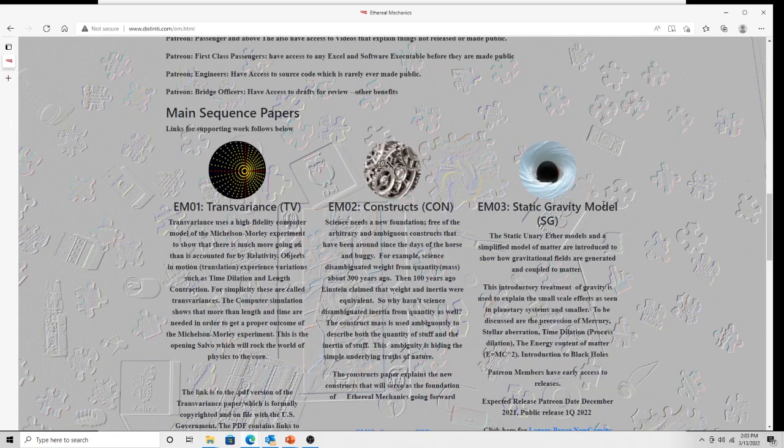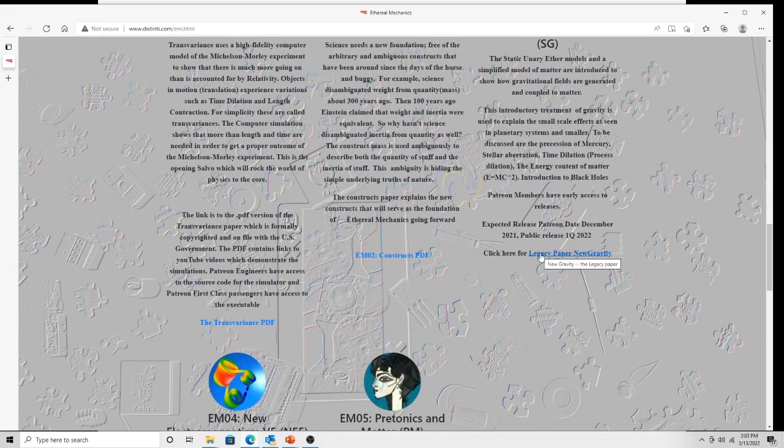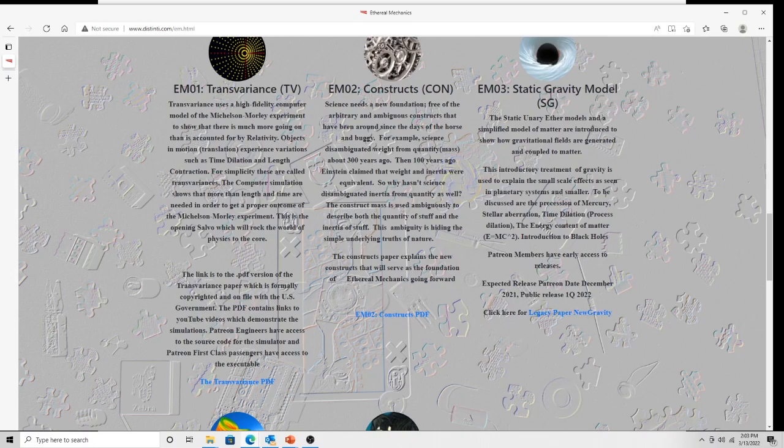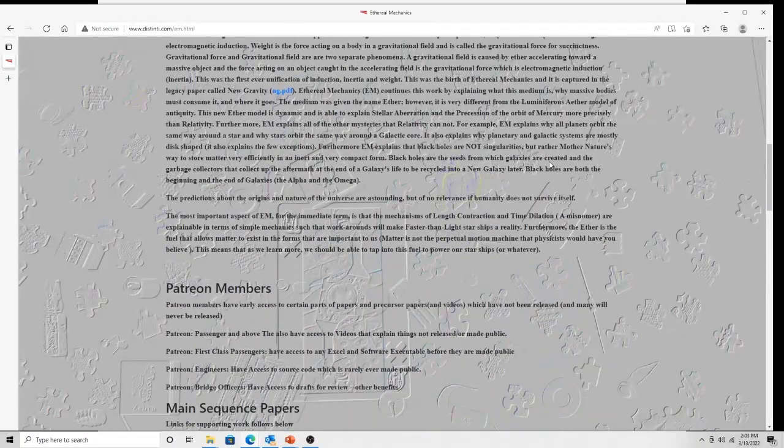Ethereal Mechanics 02 is Constructs, and the paper is here. This paper we're talking about in this video is going to replace this one. This was going to be a shortened version, but we're going to expand on it a lot. If you want to see the legacy paper on gravity, go to this link here - this is a paper that's nearly 20 years old, but a lot of improvements with the new models.